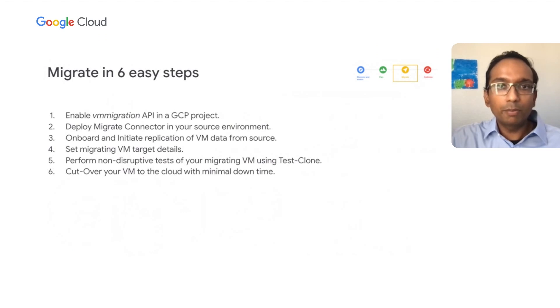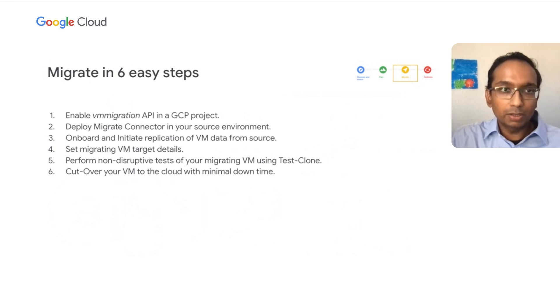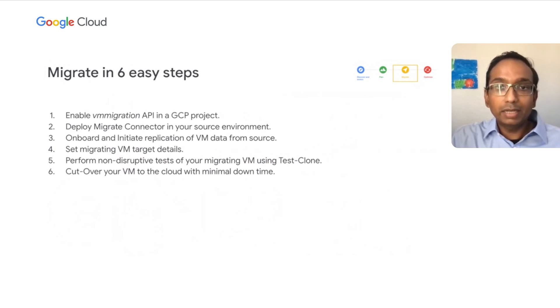There are six easy steps. You enable your API, deploy a migration connector, onboard and initiate replication, set your VM target, perform your test, and cutover. Users can test their workloads pre-cutover by creating clones of the workload from the replicated data in the cloud without disrupting the source workload. It also adapts the migrated workloads automatically to run natively in the cloud and includes network setting and installation of cloud agents for seamless integration with cloud services post-migration.